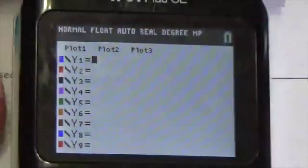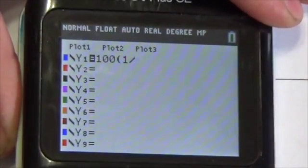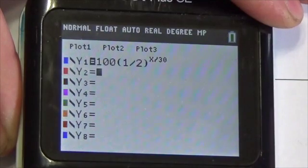Okay, so I will enter over here. This will be 100 times 1 divided by 2 to the power of x divided by 30. And then down here, I'm going to want 5 to be left over.